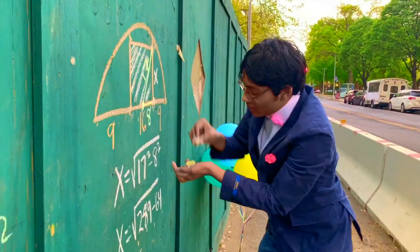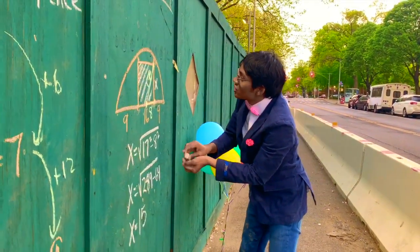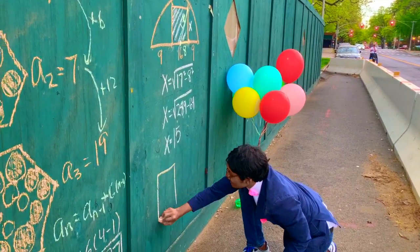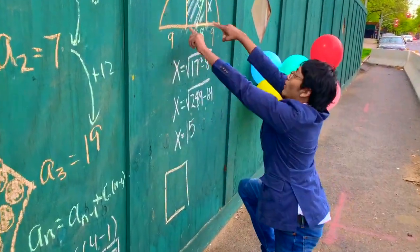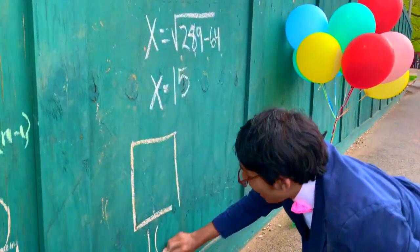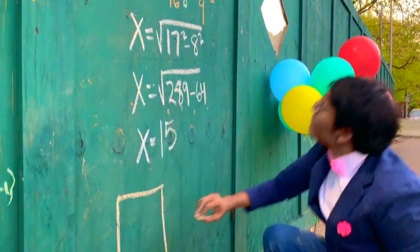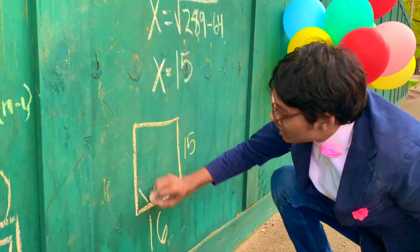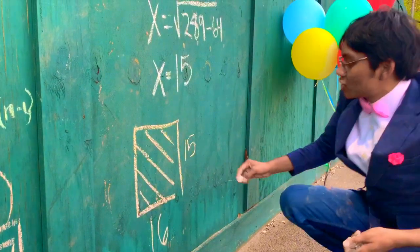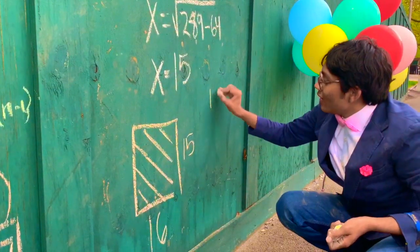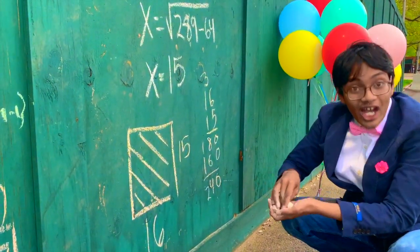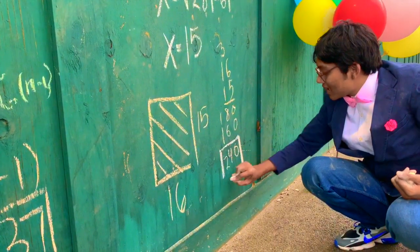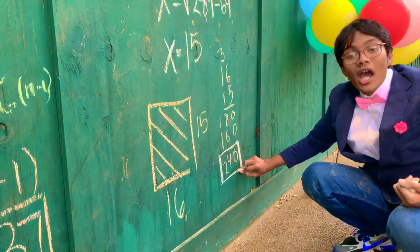So now we know the height is 15, and we also know the width of the rectangle is 16. We know both the width and the height, so we can find the area by just multiplying. 16 times 15 — our final answer for the area of this rectangle is 240.